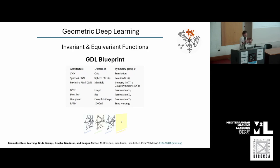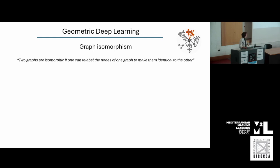The symmetry group in graphs is usually permutations. GNNs are architectures that are very good at dealing with the symmetry group of permutations. To understand what a permutation means in this context and how it affects our networks, we need to talk about the problem of graph isomorphisms.